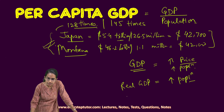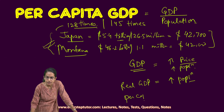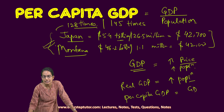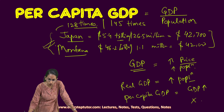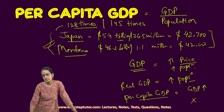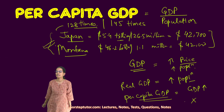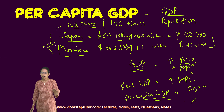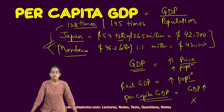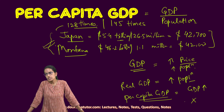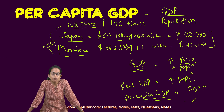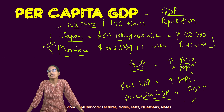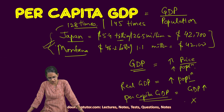Now, what does per capita GDP depend on? Per capita GDP would depend on an increase in GDP but it would not depend on population increase, because it is per capita — we are dividing GDP by the population. Nominal GDP would be affected by price rise as well as population increase.